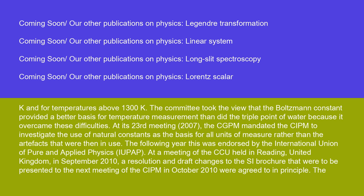The committee took the view that the Boltzmann constant provided a better basis for temperature measurement than did the triple point of water, because it overcame these difficulties. At its 23rd meeting in 2007, the CGPM mandated the CIPM to investigate the use of natural constants as the basis for all units of measure rather than the artifacts then in use. The following year, this was endorsed by the International Union of Pure and Applied Physics (IUPAP).